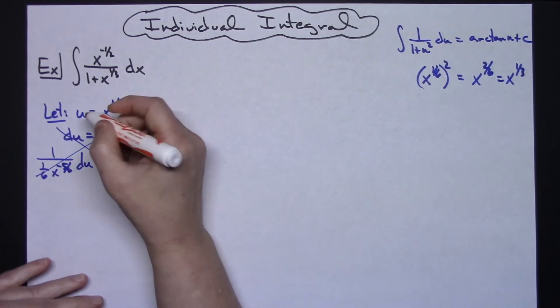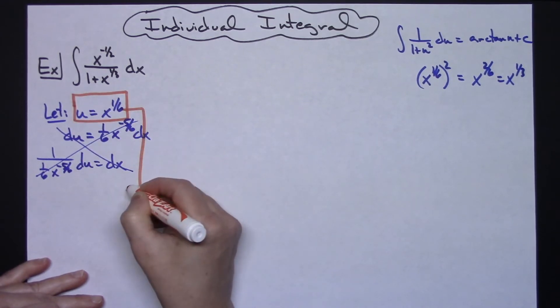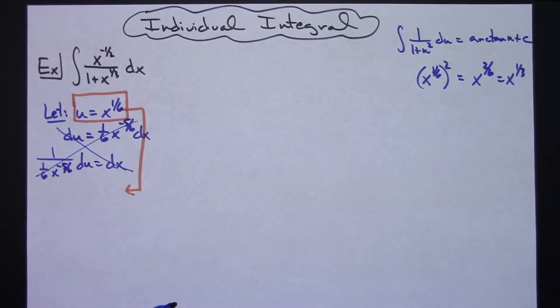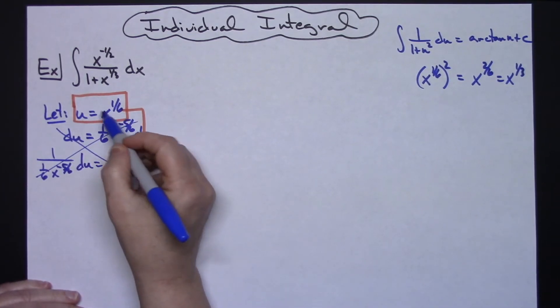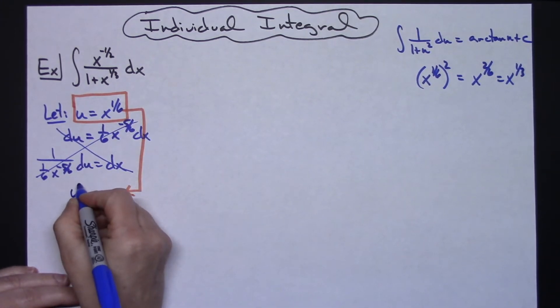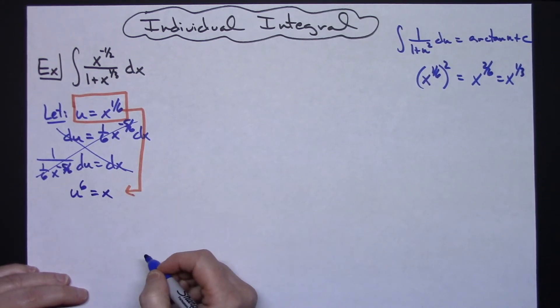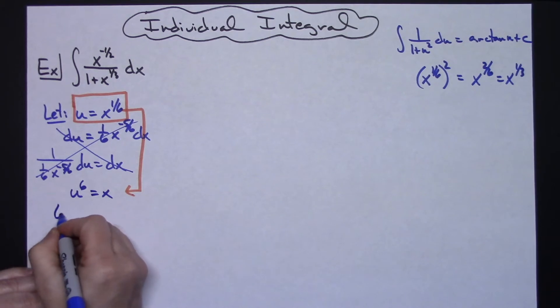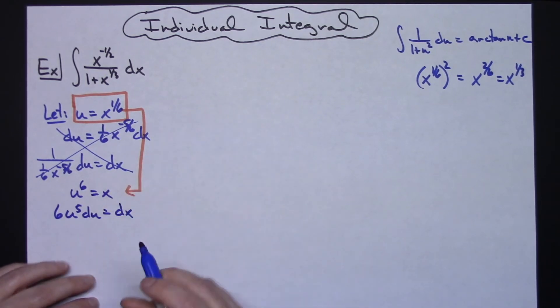So what I'm going to do to make the substituting back in a little bit easier is if I take this expression and I solve it for x. I can solve this for x real easy by taking both sides raised to the sixth power. That's going to give me a u to the sixth equaling x. Now when I take the derivative, I'm going to have a 6 u to the fifth du and then just a 1 dx there, which is going to make it a whole lot simpler when I go to plug that back in.